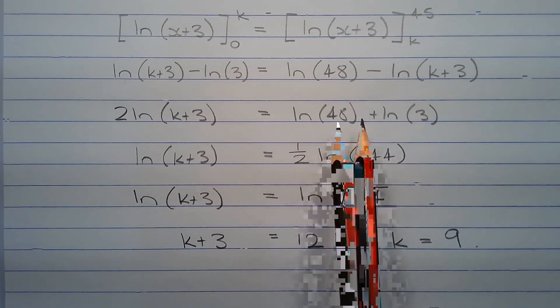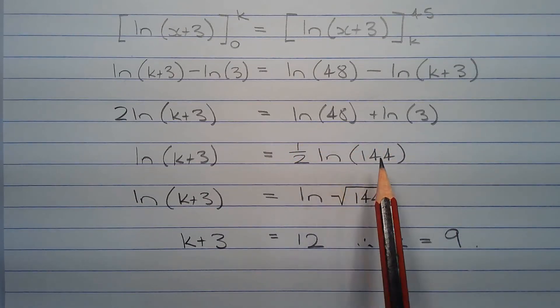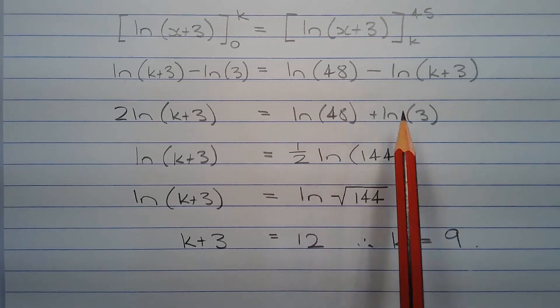Now ln of 48 plus ln of 3 is equal to ln of 144 by application of one of the logarithm laws since 48 times 3 is 144.